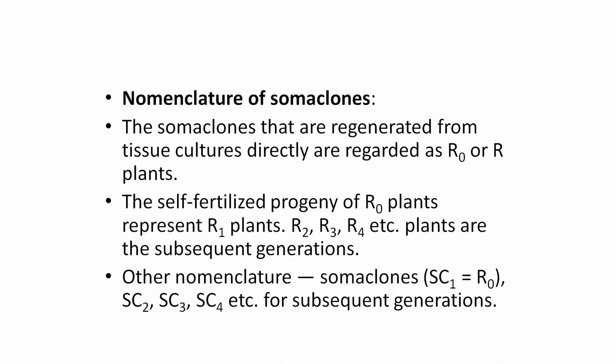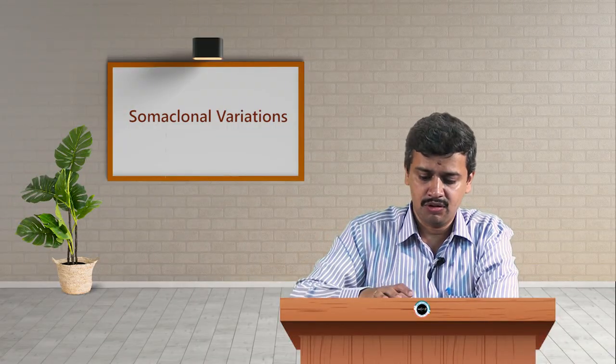Alternatively, somaclonal variations — somaclones — are abbreviated as SC. The first generation becomes SC1, which equals R0. Subsequent generations can be named SC2, SC3, SC4, and so on.